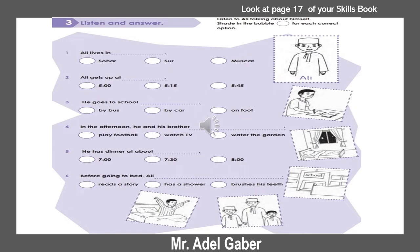Listening 2.7. Hello, my name is Ali. I live in Muscat. I am 11 years old. I am a student in grade 5. Every day, I get up at quarter past 5. I brush my teeth and go to pray with my father. Then I have breakfast at 6 o'clock and get ready for school. I go to school by bus. I enjoy my time at school. When I come back home, I eat lunch at half past 2. Then I watch television with my brother.